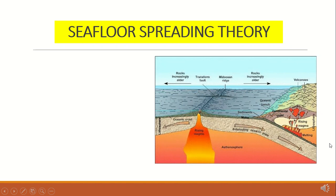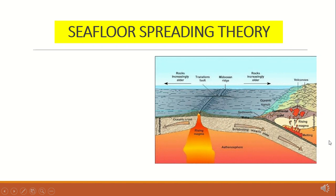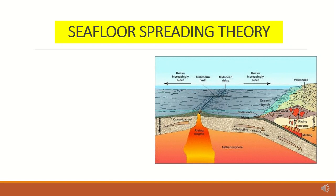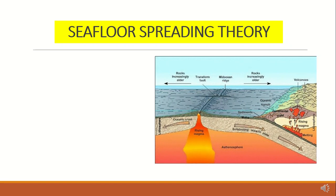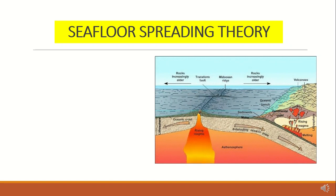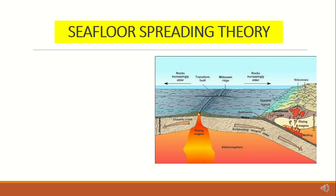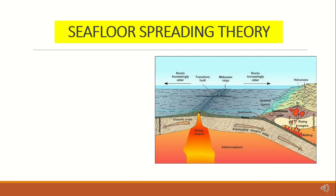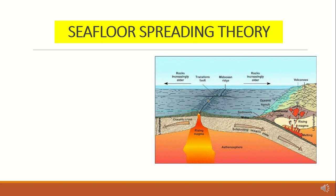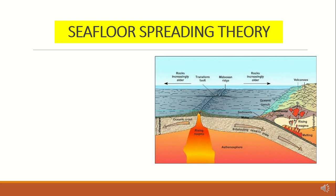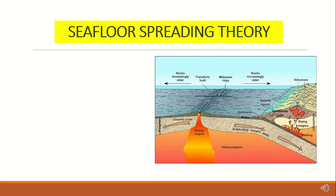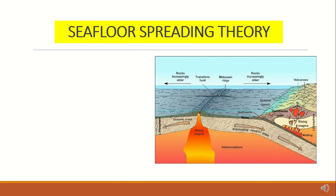Harry Hammond Hess postulated that molten materials from the earth's mantle continuously well up along the crest of the mid-ocean ridges, which wind for nearly 80,000 km through all the world's oceans. As the magma cools, it is pushed away from the flanks of the ridges. This spreading creates a successively younger ocean floor, and the flow of material is thought to bring about the migration or drifting apart of the continents.